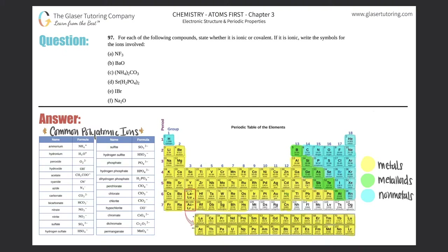Number 97: for each of the following compounds, state whether it is ionic or covalent, and if it is ionic, write the symbols for the ions involved. We went over the first part in the last two questions, so if you haven't done that, go back for more practice. We should know the difference between an ionic compound and a covalent compound.